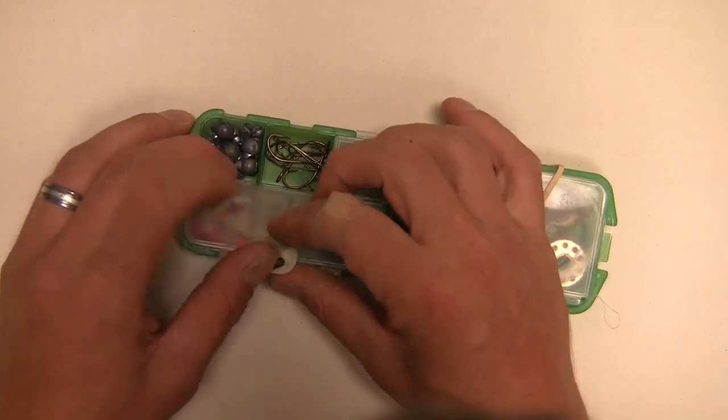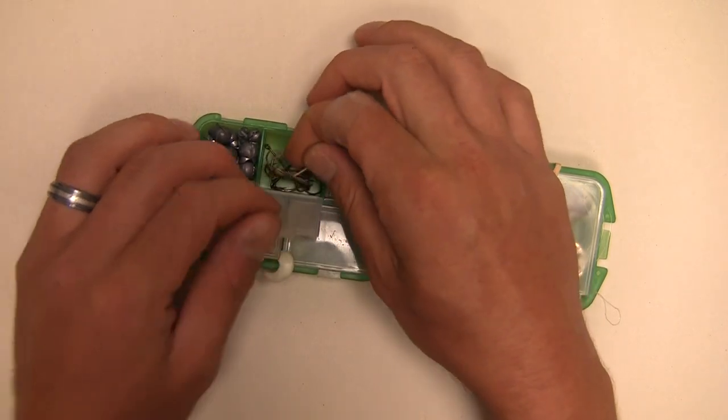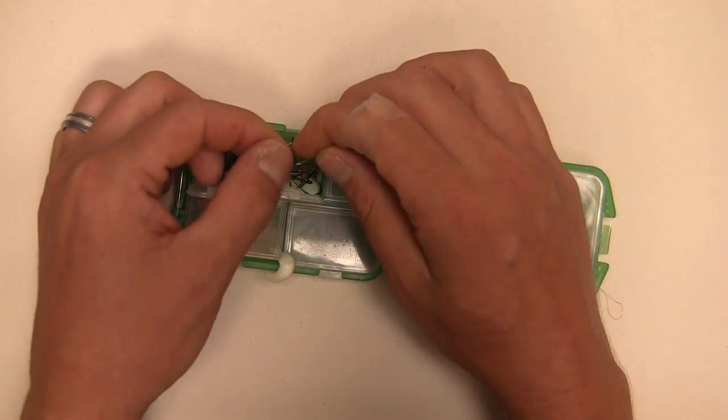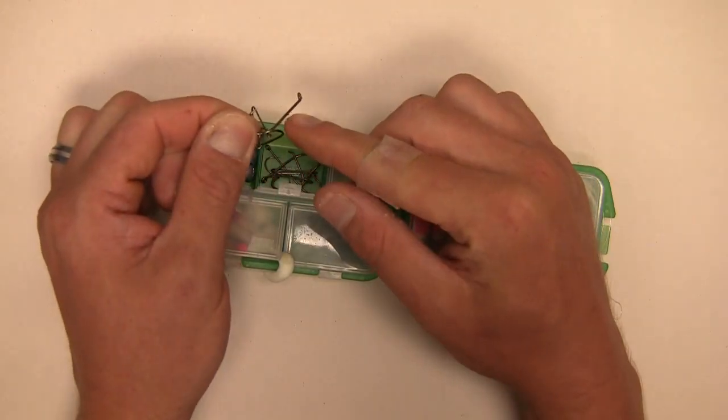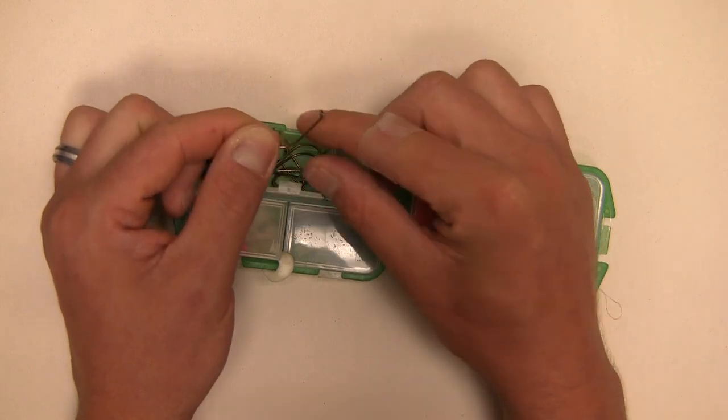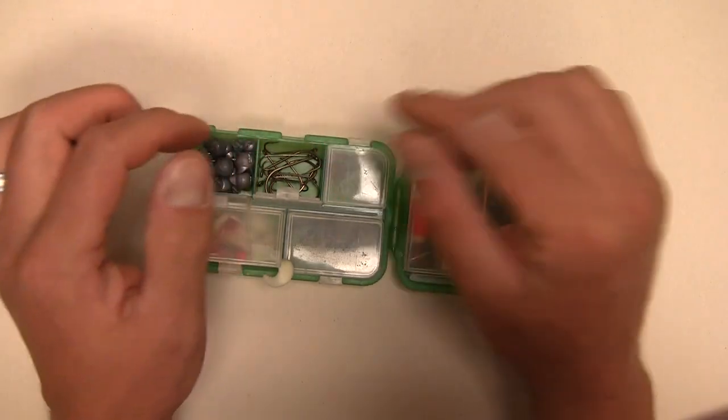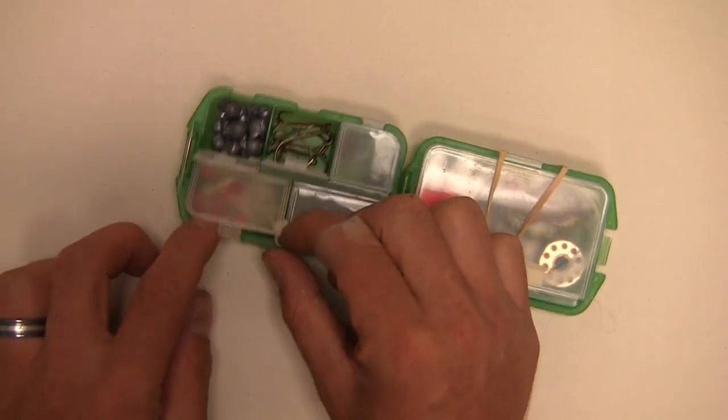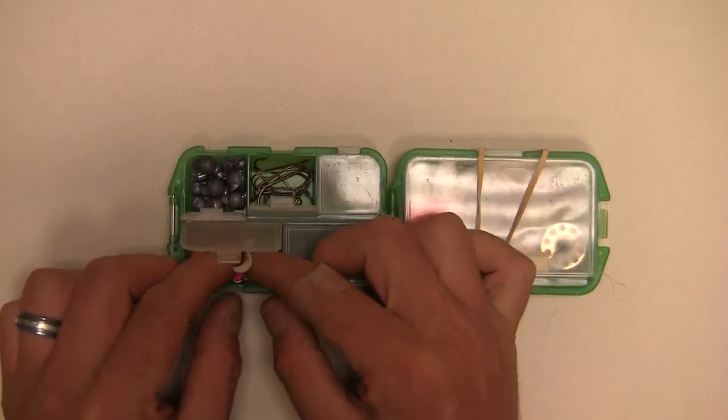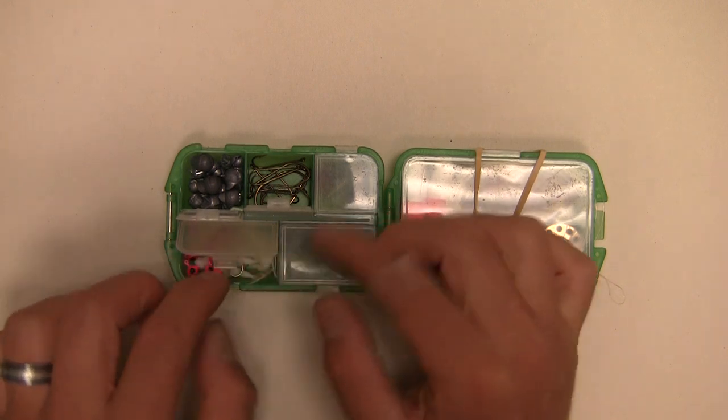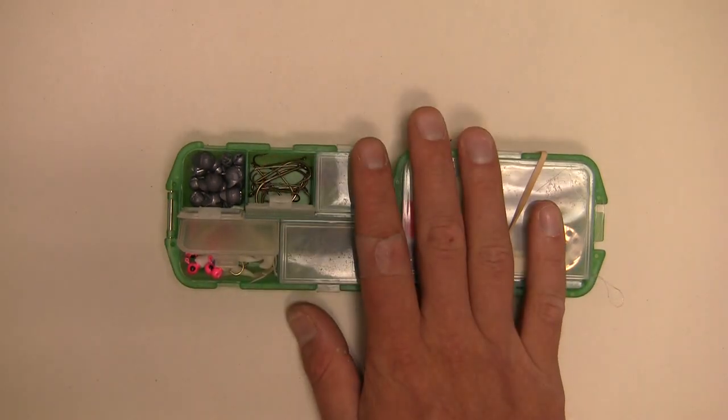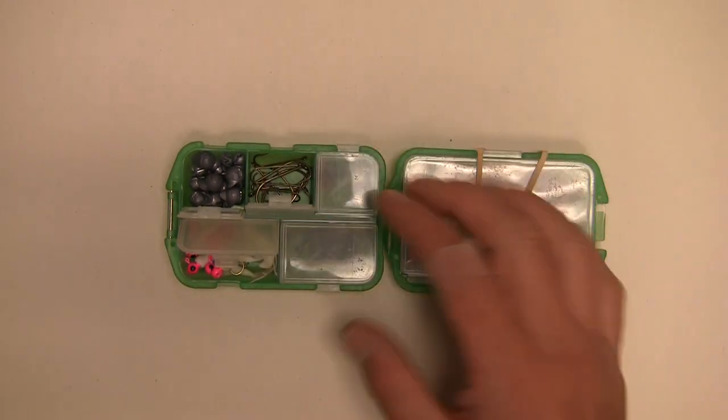I have various sizes of hooks here, everything from the Aberdeen style to the bent style with double barbs on it. Coming from an entomological background I'm able to find bait pretty quickly in most places. I've got some lures in here just in case I'm not able to.